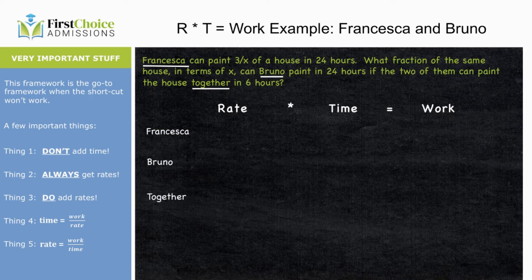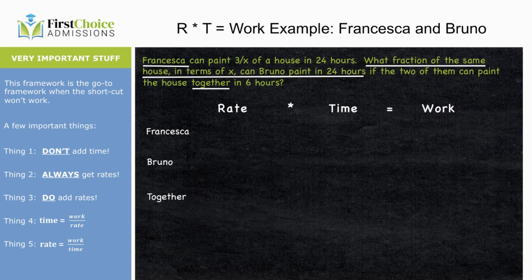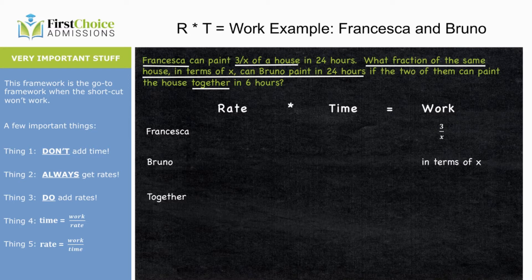Next, we pull out what we're being asked: what fraction of the same house, in terms of X, can Bruno paint in 24 hours? We're talking about Bruno, and they can only ask us for one of three things — rate, time, or work. We're being asked for Bruno's work, and we're told the answer will be in terms of X, meaning it'll be some kind of math phrase with X's in it. For Francesca, we know she paints three over X of a house — that's her work.